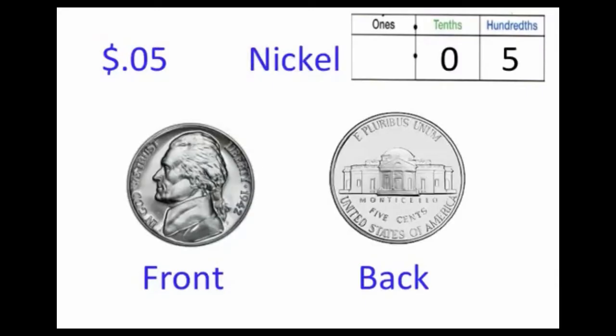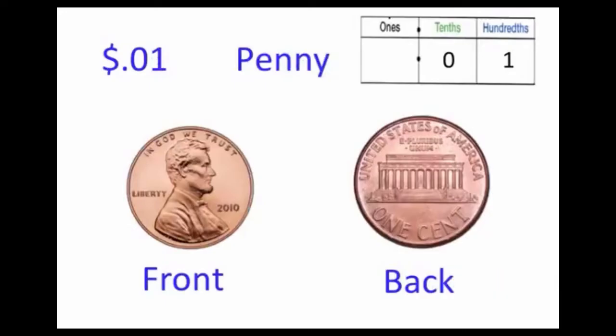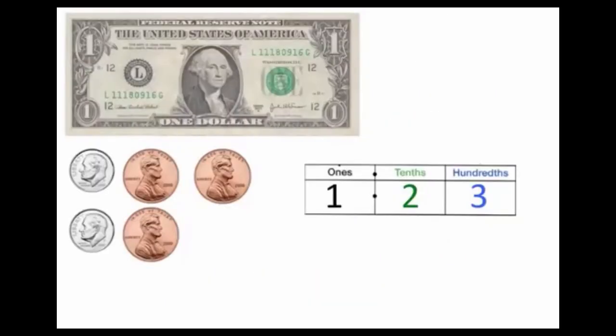The next one is nickel. A nickel is worth five cents. Its value is five-hundredths. It is five-hundredths of a dollar. Now let's look at a penny. We've already said a penny is one-hundredth. There are one hundred pennies in a dollar. A penny is worth one cent.